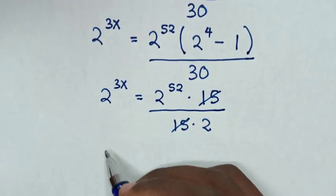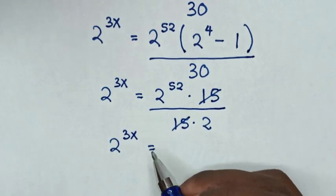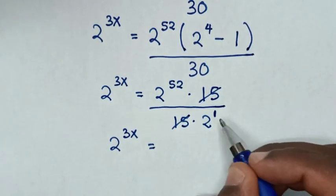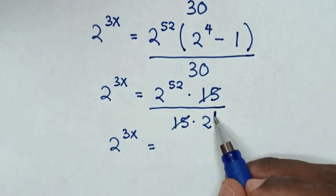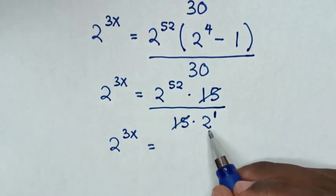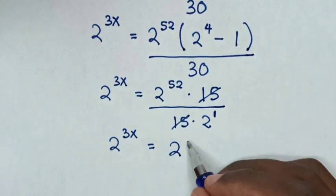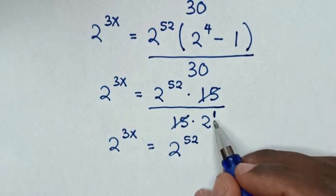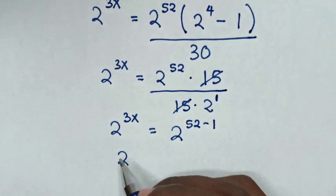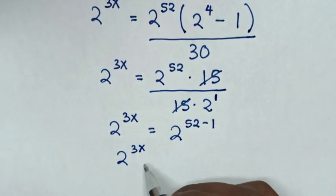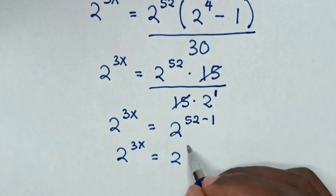So it will be 2 power of 3x is equal to: here 2 is the same as 2 power of 1. Then in here, 2 power of 52 minus 2 power of 1. In here 2 power of 3x is equal to 2 power of 52 minus 1, which is 51.